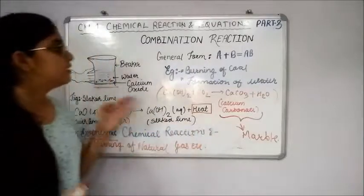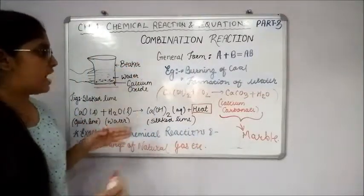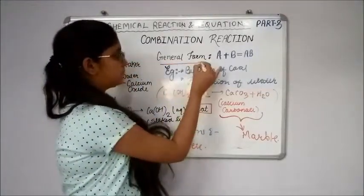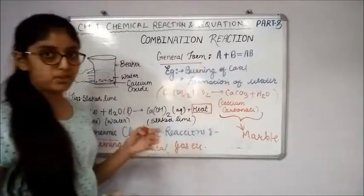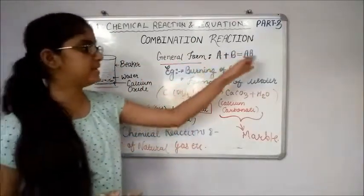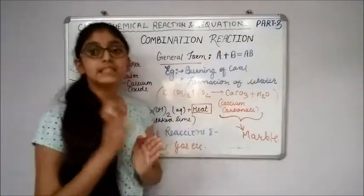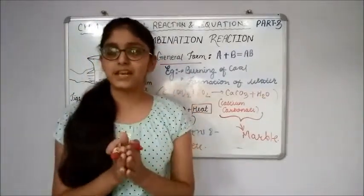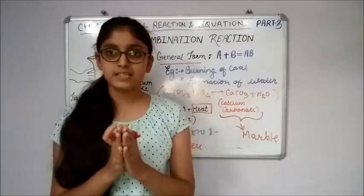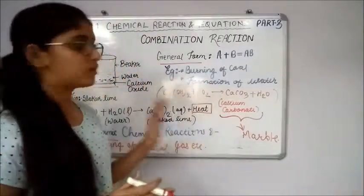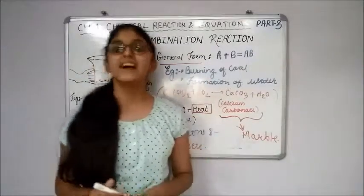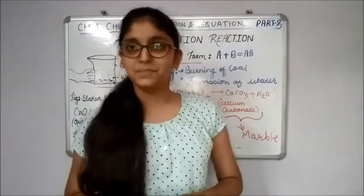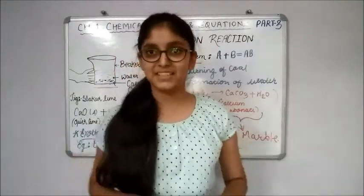This is all about combination reaction. There are many examples for combination reaction but the general form that you can remember is A + B equals AB, because any two or more substances react to form one substance. When only one substance is formed, then see that combination reaction is taking place. Thank you for watching my video. We will meet in our next video. Thank you, bye bye.